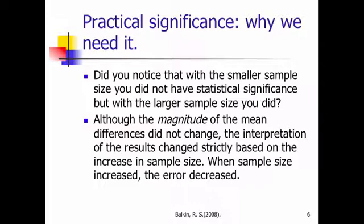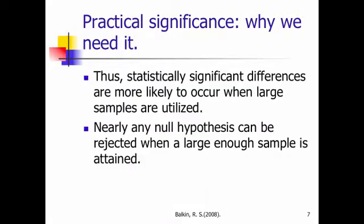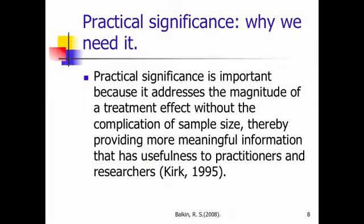So when sample size increases, error decreases. Hence, we can manufacture statistical significance simply by having an enlarged sample size. If you get a really large sample size, you're going to find statistical significance. So nearly any null hypothesis can be rejected when a large enough sample size is attained. When we talk about playing games with statistics, this is exactly what we're talking about. So saying something is statistically significant may not be that important. It might just be a virtue of having a large sample size. Practical significance is important because it addresses the magnitude of a treatment effect without the complication of sample size. So it provides more meaningful information and more usefulness to practitioners and researchers. This is very important. Media doesn't need to be reporting statistical significance. They also need to be reporting practical significance.